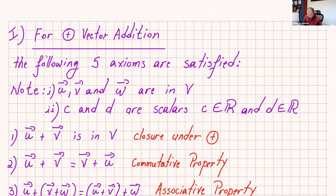Hello, everyone, and welcome again to this lecture. In this lecture, I want to go over some more examples of proving vector spaces. In the last video, I proved one that was a vector space. Here, I want to show you some examples that are not vector spaces and how the 10 axioms fail.